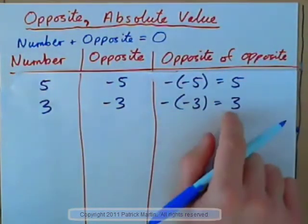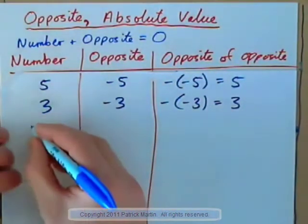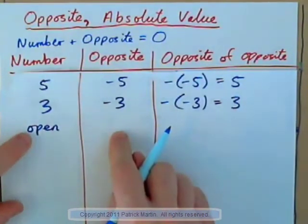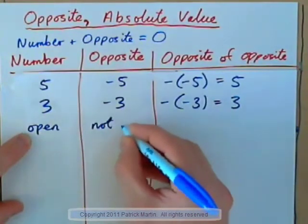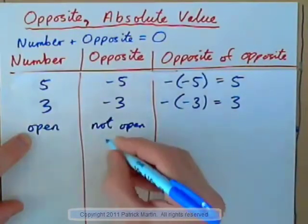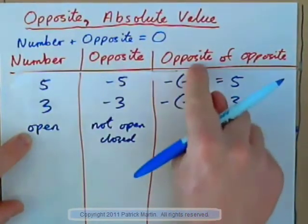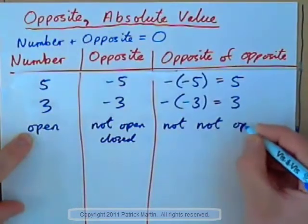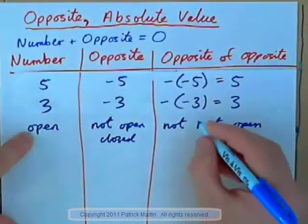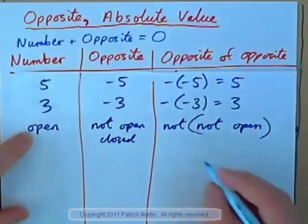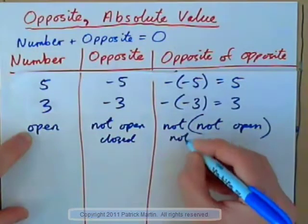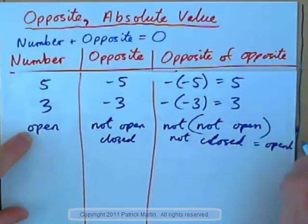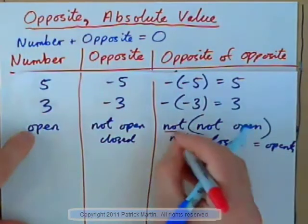So we have a double negative making a positive, and that occurs all the time. For example, if you have open, what's the opposite of open? Well, the opposite is not open, or closed, right? So what's the opposite of the opposite of open? It's not, not open. The door is not, not open, right? Well, that means not, not open is closed, so it means it's not closed. If the door is not closed, that means the door is open. So we have two negatives — not, not — make a positive.